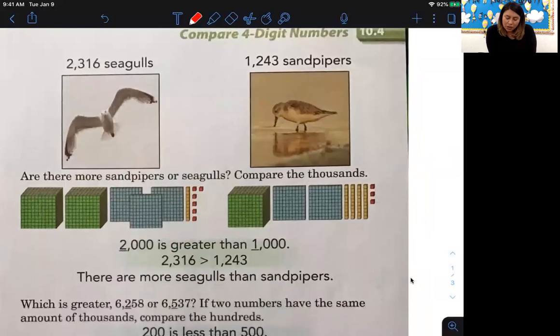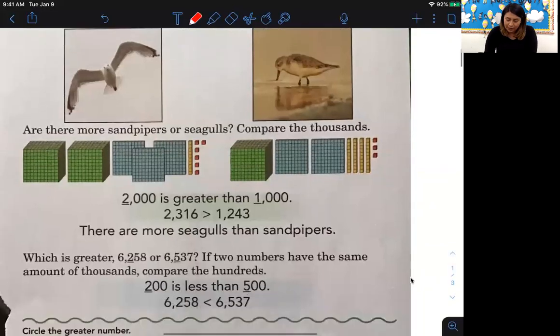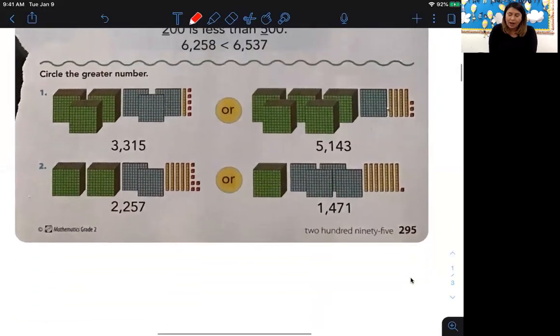We're comparing the numbers. So there's 2,316 seagulls, 1,243 sandpipers. Are there more sandpipers or seagulls? They went ahead and represented the amount of birds with the base 10 blocks. Can you see it there? There's 2,000 on this side for the seagull side, and there's 1,000 for the sandpiper side. Well, just looking at those numbers, we know that if you have 2,000 versus 1,000, 2,000 is more than 1,000. So seagulls, in my opinion, is greater than just by looking at that. But maybe you need to take one step further, and that's okay. Let's see, 2,000 is greater than 1,000, so we know that 2,316 is greater than 1,243.